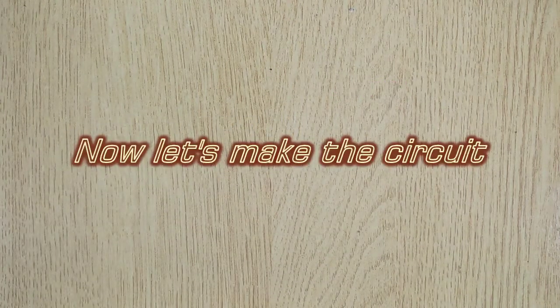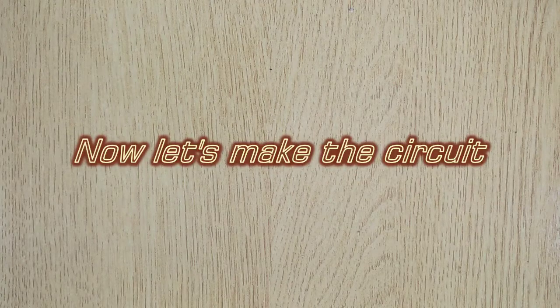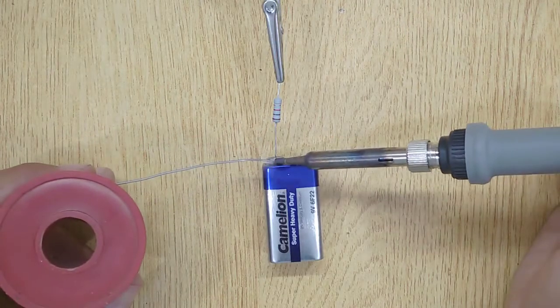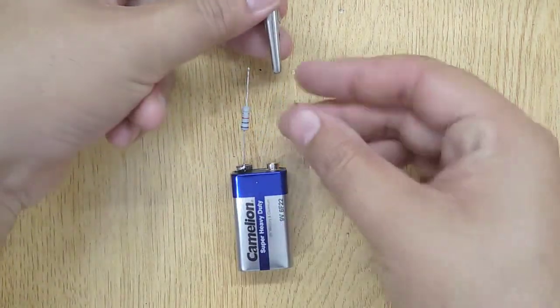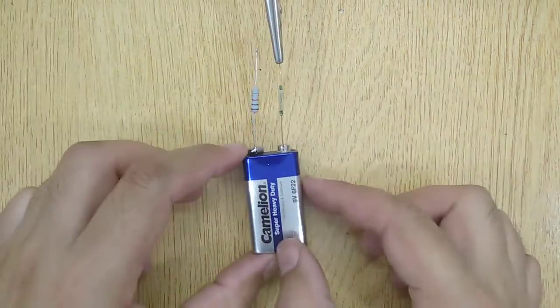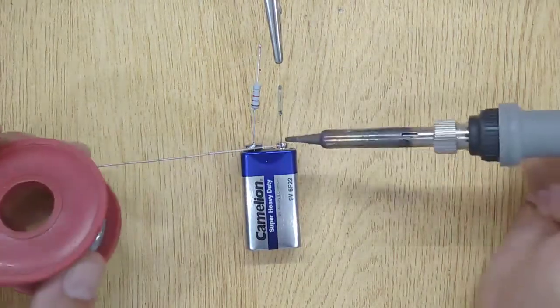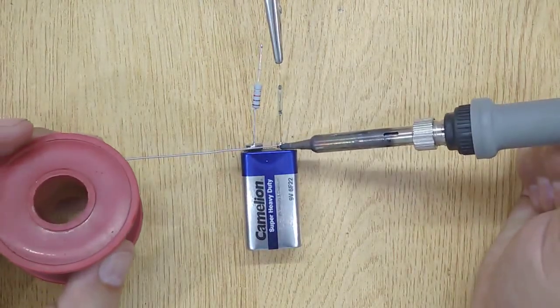Now let's make the circuit. First solder the 1kohm resistor with the negative terminal of the 9V battery. And then solder the reed switch with the positive terminal of the 9V battery.